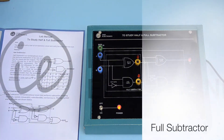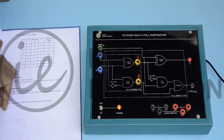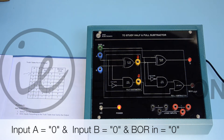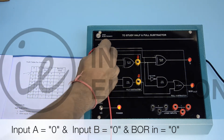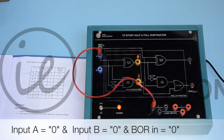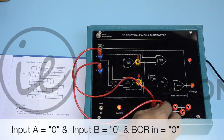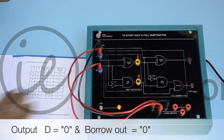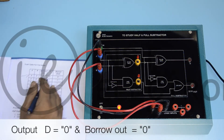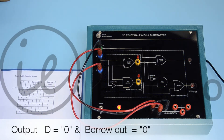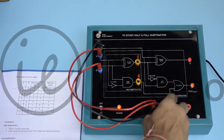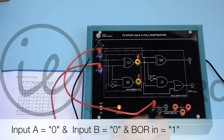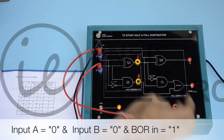Secondly, we are going to verify the truth table of the full subtractor. Connect A input to logic 0, B input to logic 0, and borrow in to 0. Now connect A input to logic 0, B input to logic 0, and borrow in to 1.